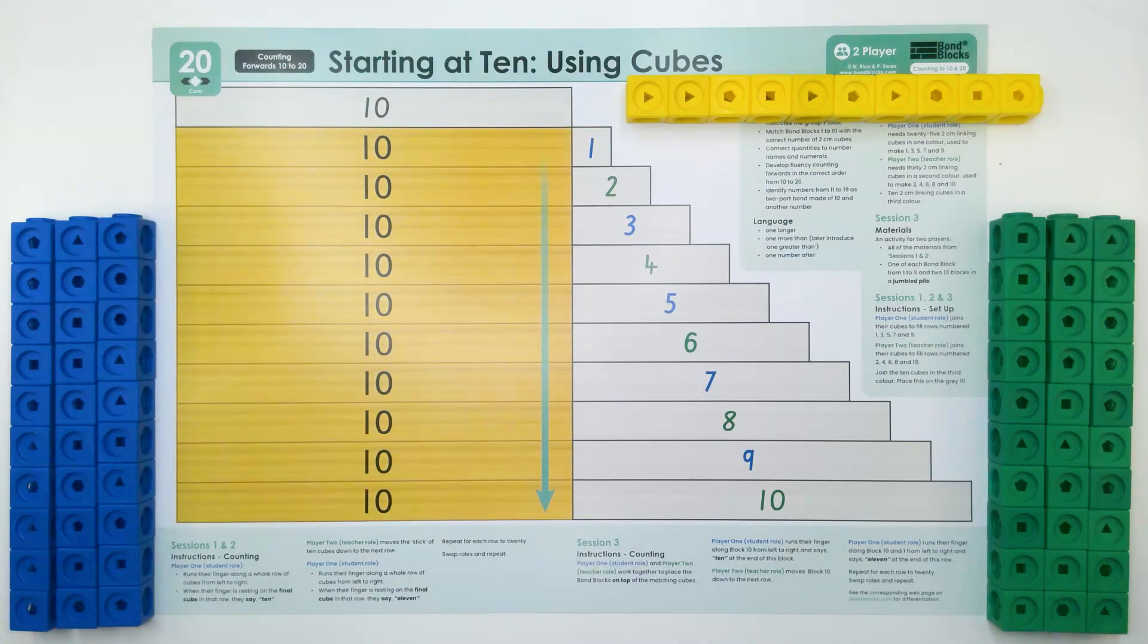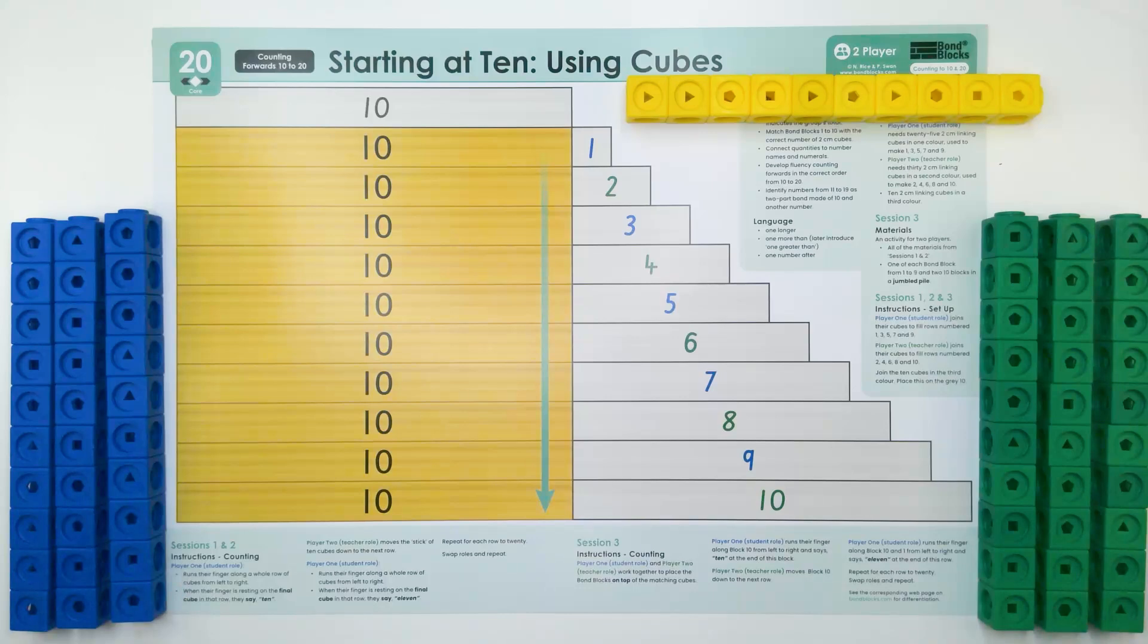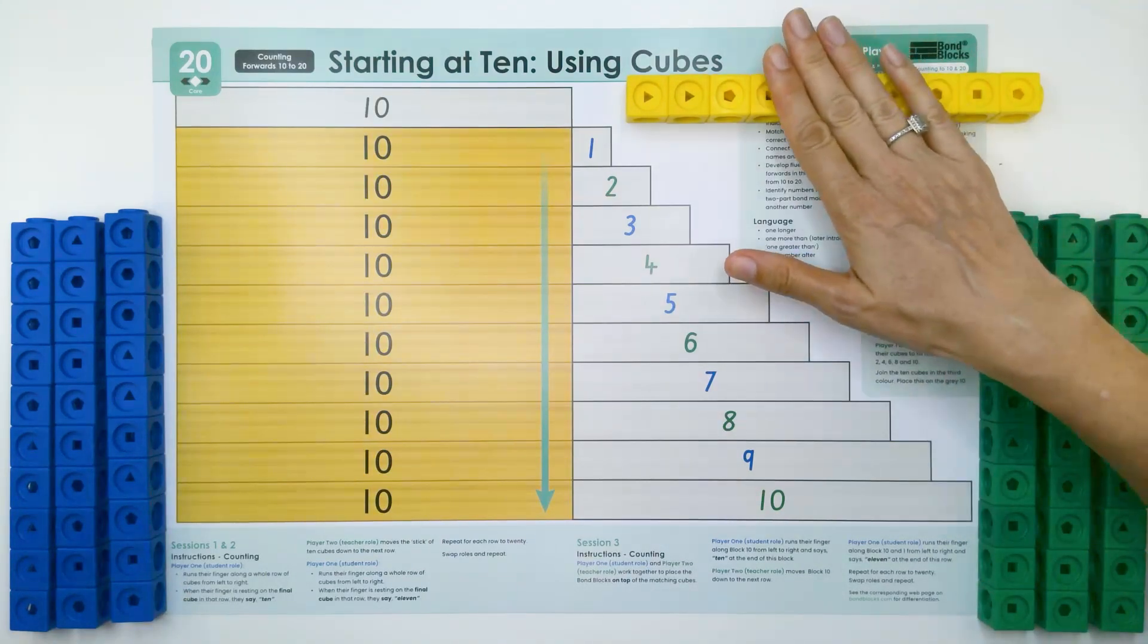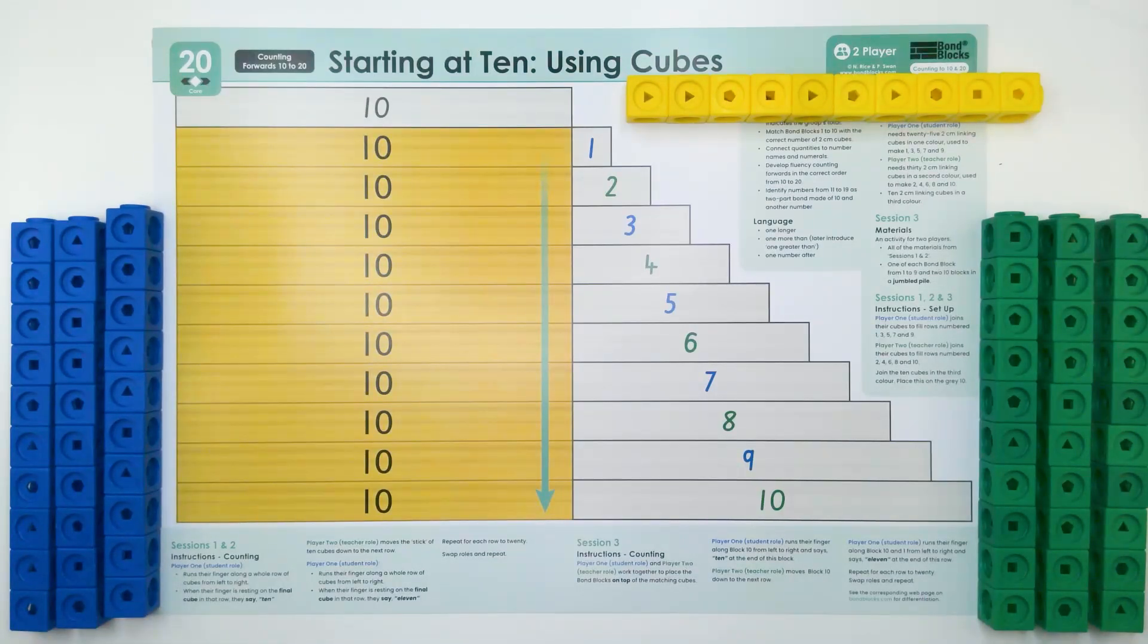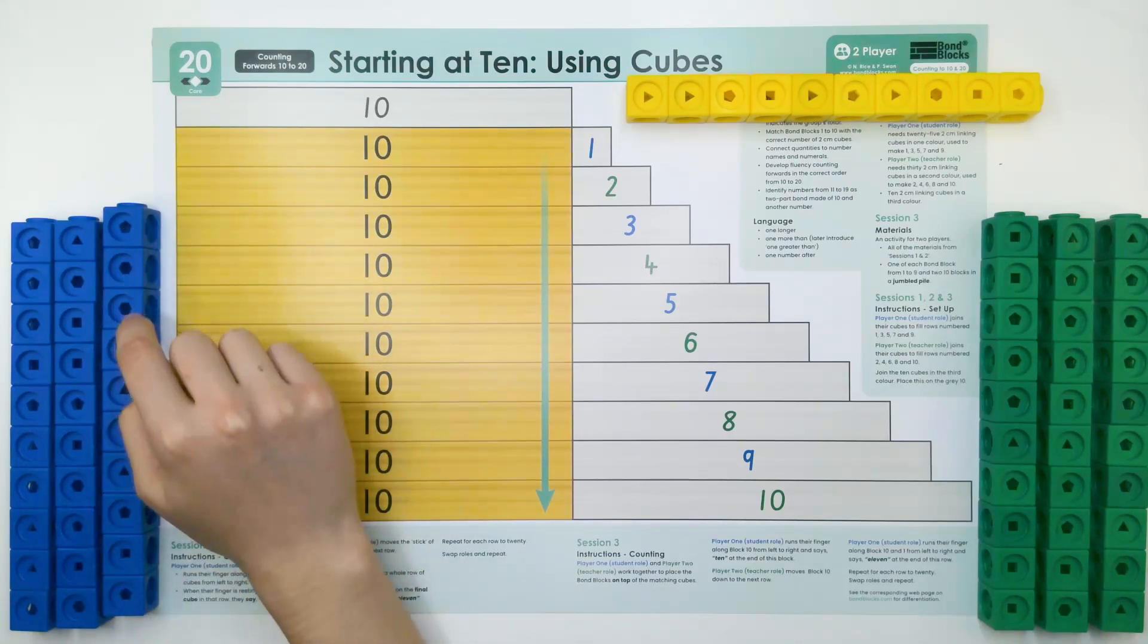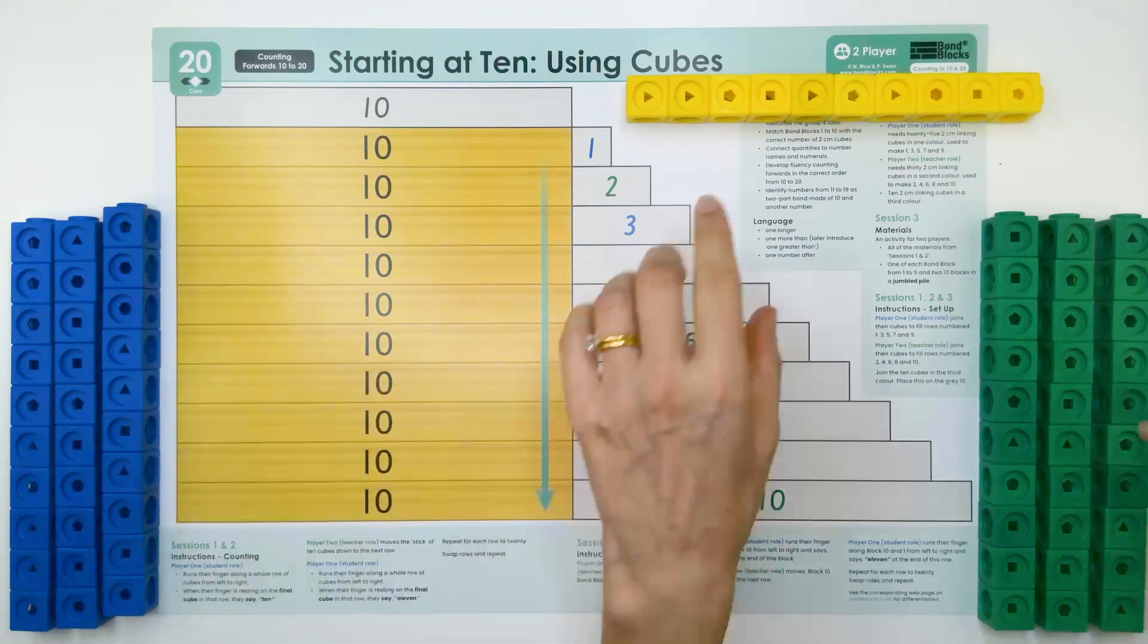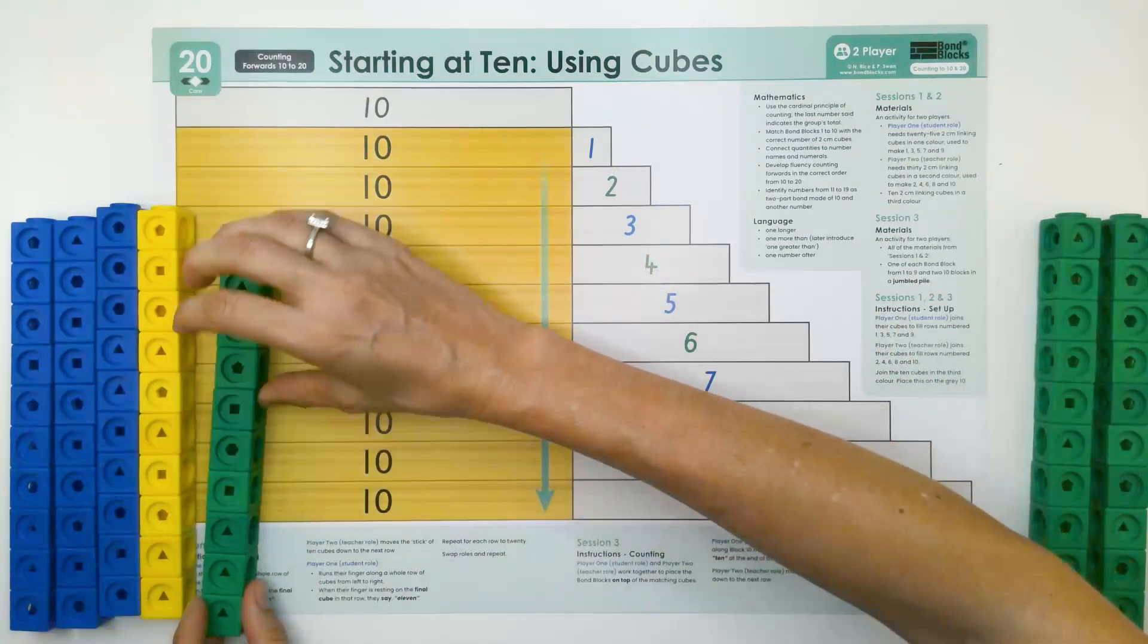To complete this activity, each player needs three tens in a different color. You also need an extra ten in a third color. Karis, you're player one, could you just check that you've got 10 in your stick? 1, 2, 3, 4, 5, 6, 7, 8, 9, 10. Great! If we know that one's correct, I'm just going to check that these are also 10. Yes.